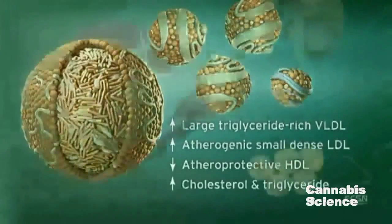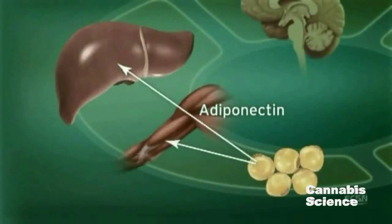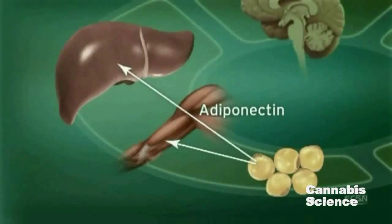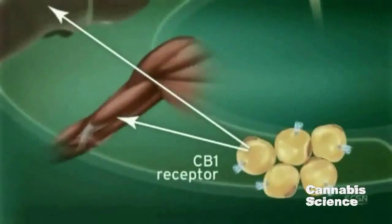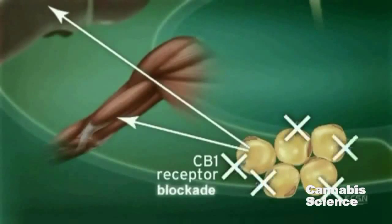Adiponectin, another hormone secreted by adipocytes, regulates lipid and glucose metabolism. Adiponectin is believed to regulate fatty acid oxidation in muscle and liver, thus improving insulin sensitivity. CB1 receptor stimulation in adipocytes reduces adiponectin, while CB1 blockade increases adiponectin synthesis.